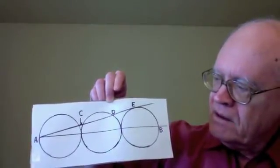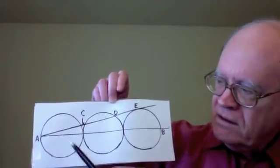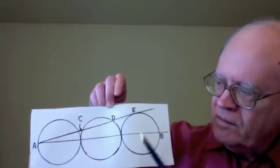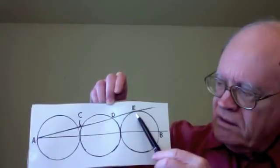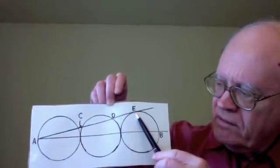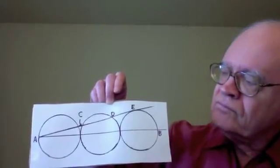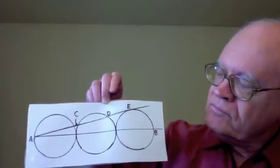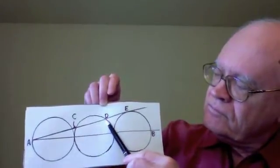We also have, besides line AB, a slanted line AE. E is the point of tangency, that is, the point at which line AE barely touches the third circle. And as you see, this slanted line intersects the middle circle at point C and at point D.